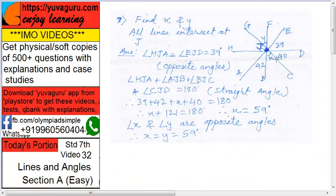In the given figure, we have to find X and Y, both of these. All lines intersect at J, that is what is given, this point is known as J.